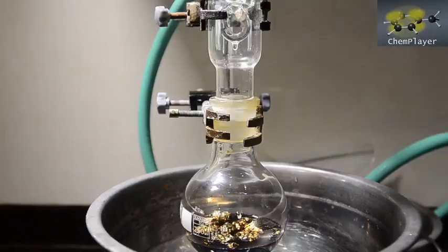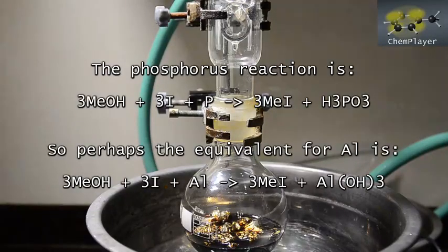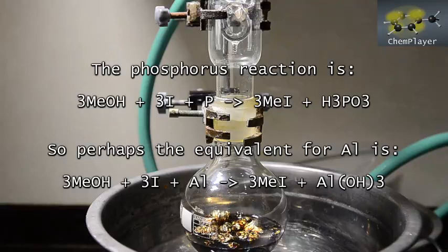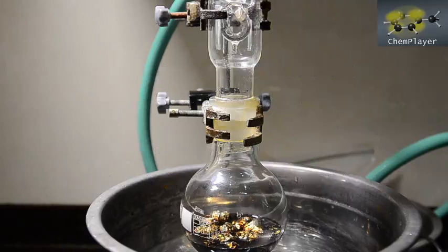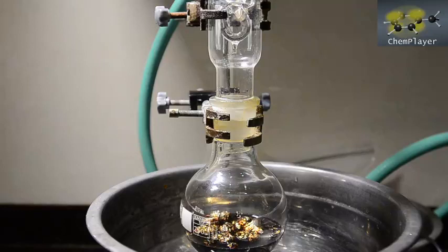In theory, if the reaction is like its red phosphorus counterpart, the aluminum and iodine form aluminum iodide, and this then reacts with the methanol forming aluminum hydroxide and methyl iodide. But we can't explain why, but it just doesn't feel like that's what's happening here. If lots of methyl iodide was being produced, then we'd expect to see a lot more refluxing at the warm flask temperature.